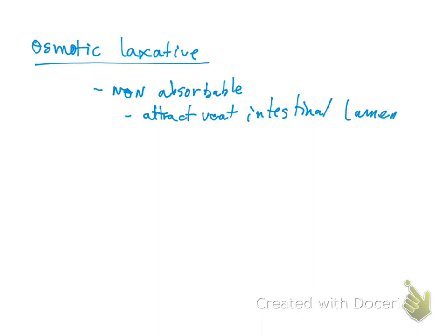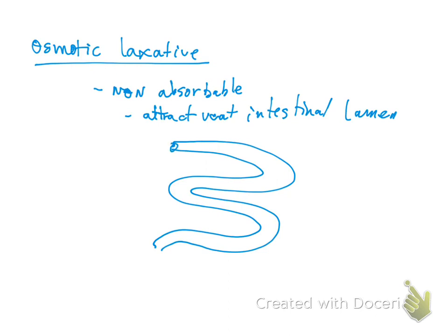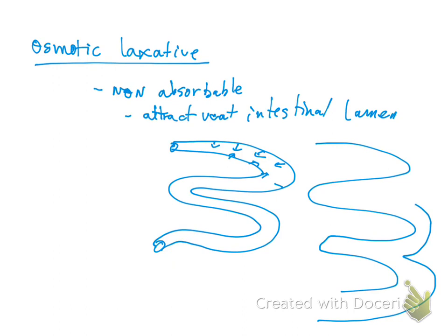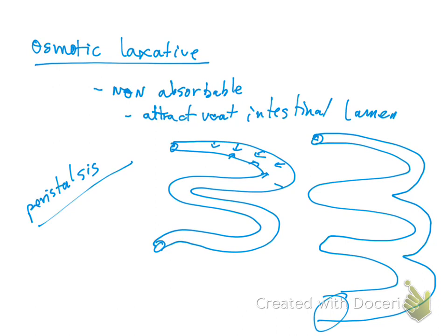Let me draw this. Imagine that this is your GI system. Because you cannot absorb the substance, everything is going to accumulate here, attract water, and your intestinal lumen is going to distend. So now it is huge — distended. And then that increases movement, which is called peristalsis.